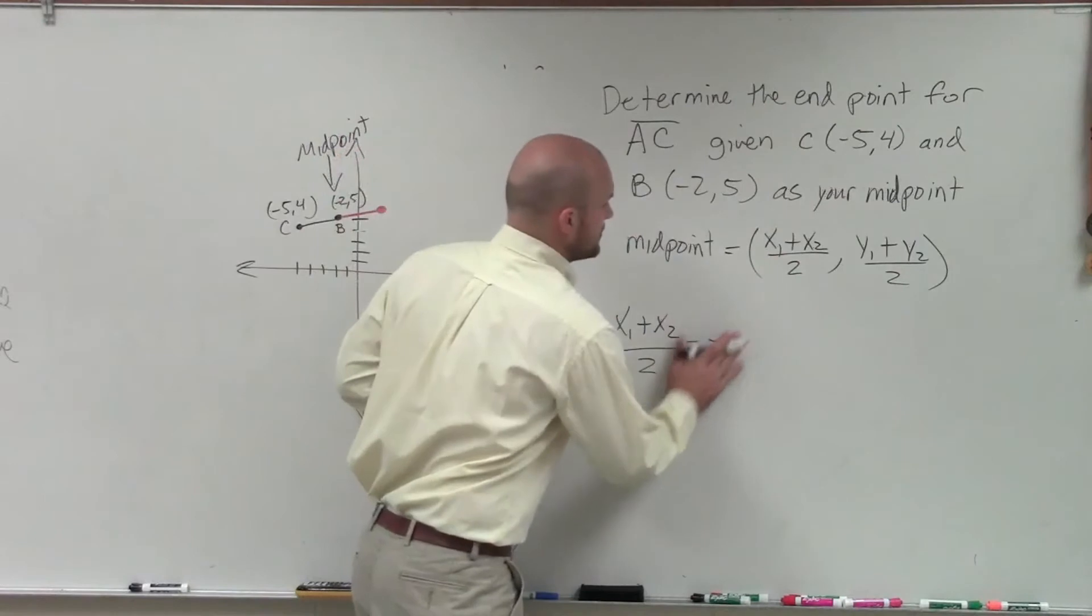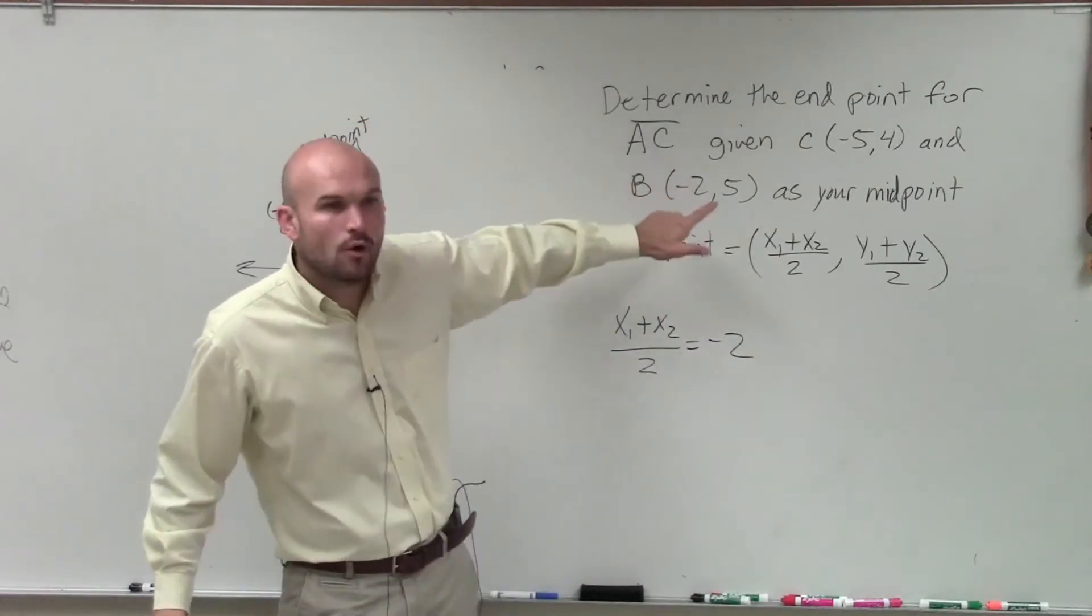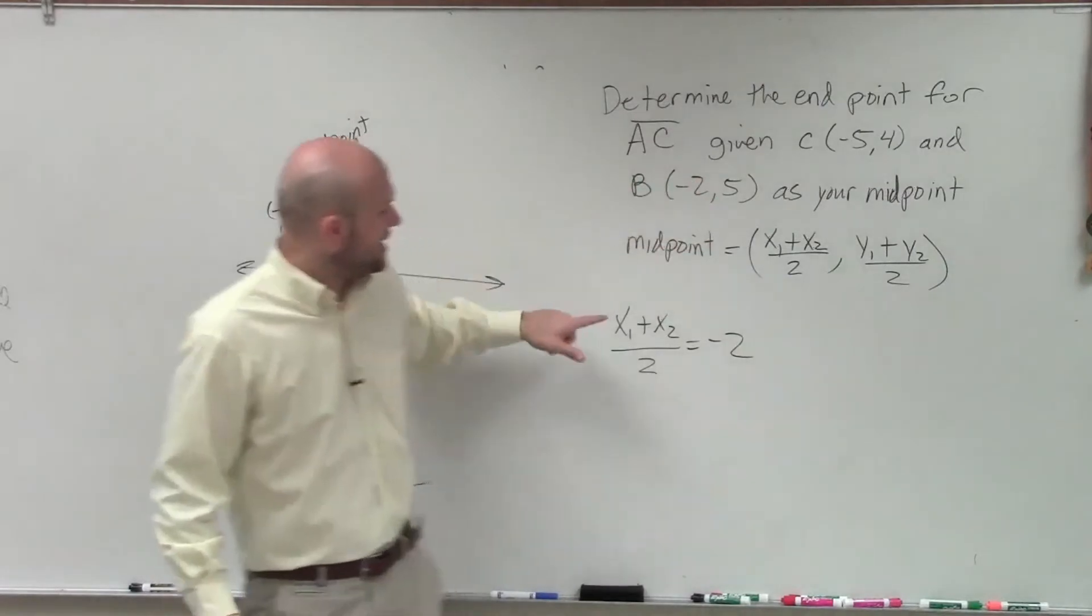Oh, I'm sorry. As B, that equals negative 2. Sorry, that equals my value of negative 2. That's the x-coordinate of my midpoint.